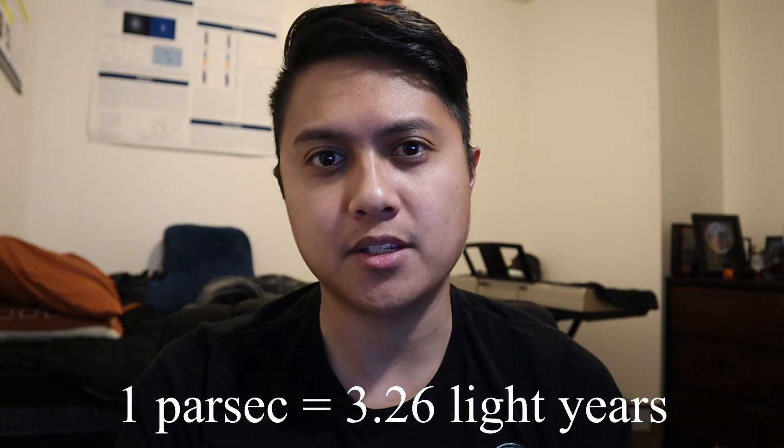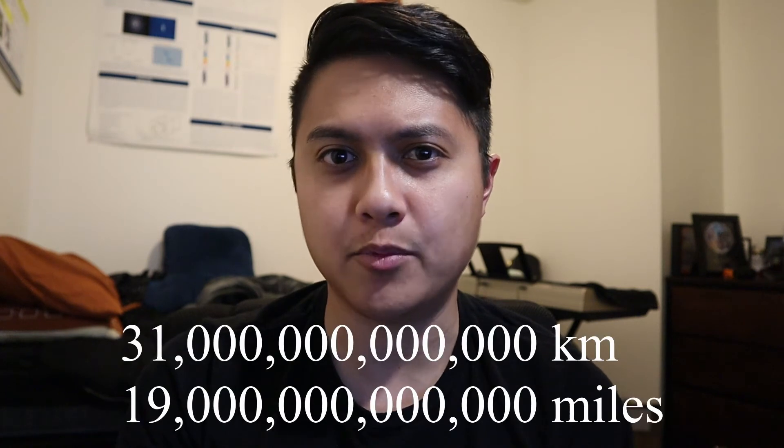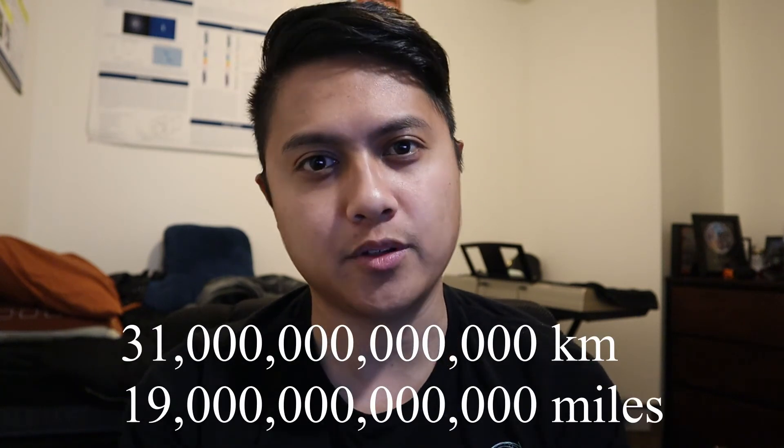However, as I started to learn more about physics and astronomy, I learned that parsec was actually a unit of distance. To be precise, a parsec is the distance light travels in 3.26 years, or in more everyday units, it's something like 31 trillion kilometers or 19 trillion miles.